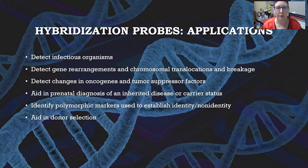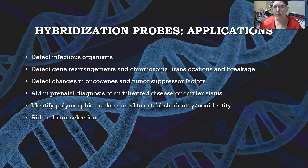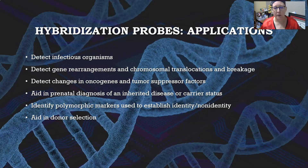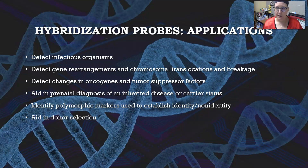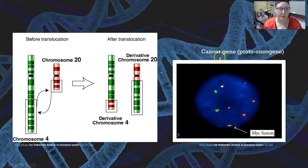Why do we use hybridization probes? We can use them to detect infectious organisms, gene rearrangements, chromosomal translocations and breakage — helpful especially with cancers and genetic diseases. We can detect changes in oncogenes and tumor suppressor genes, aid in prenatal diagnosis of inherited disease, detect carrier status, identify polymorphic markers for forensics or paternity testing, and aid in donor selection for transplants.